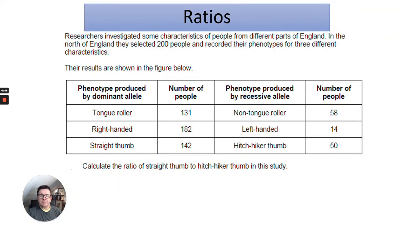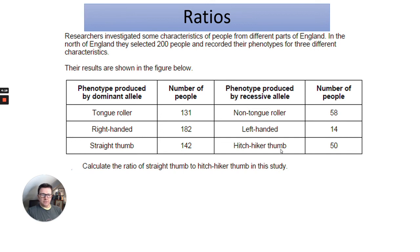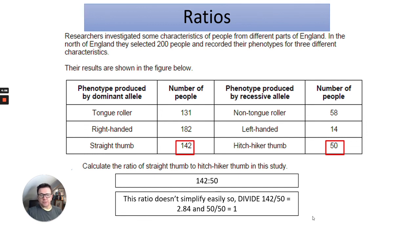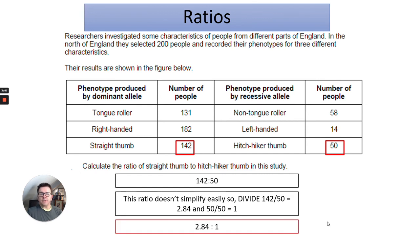Here's a second example. Researchers investigated some characteristics of people from different parts of England. In the north of England they selected 200 people and recorded their phenotypes for three different characteristics: tongue roller, right-handed, and straight thumb — showing the number of people and the phenotype produced by the recessive allele. Calculate the ratio of straight thumb to hitchhiker thumb in this study. Straight thumb is 142 and hitchhiker thumb is 50, so that's 142 to 50. Divide 142 by 50, which gives us 2.84, and 50 divided by 50 is one. So the answer is 2.84 to 1.